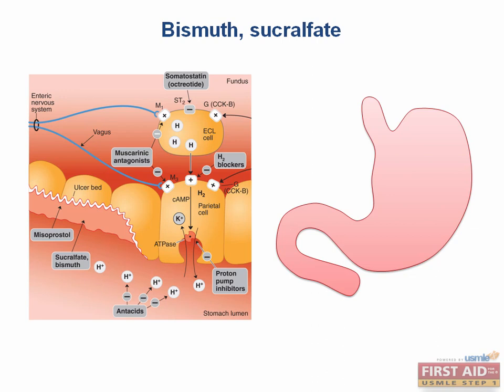Bismuth and sucralfate have a physical mechanism in which they bind to the ulcer base. This provides a physical barrier that allows bicarbonate secretion to reestablish the necessary pH gradient, which you can see here. They are used to increase ulcer healing and traveler's diarrhea, also known in some circles as Montezuma's Revenge.